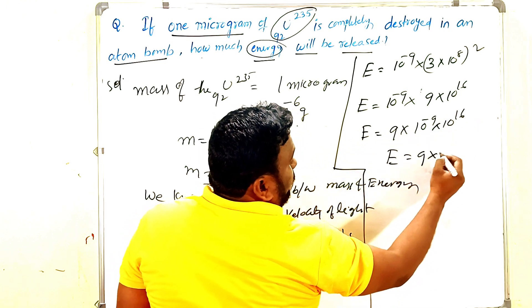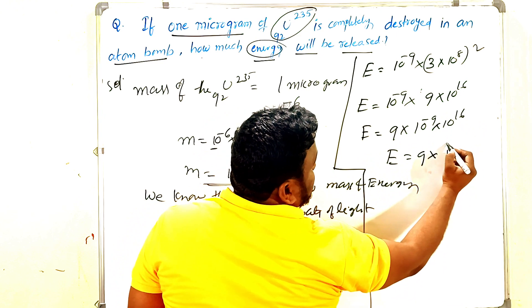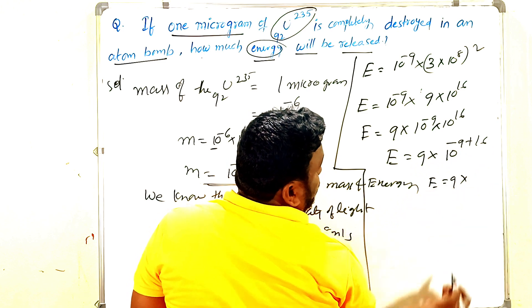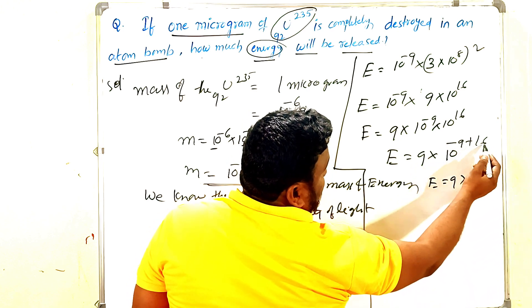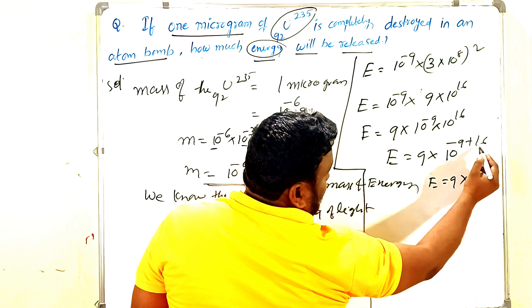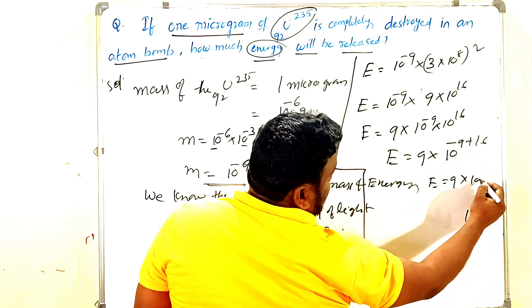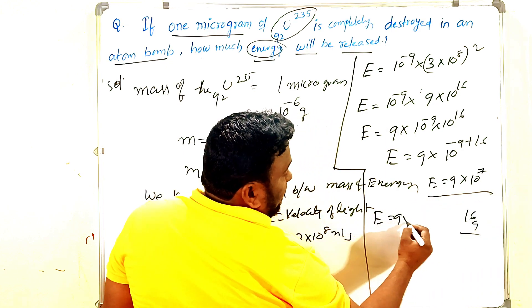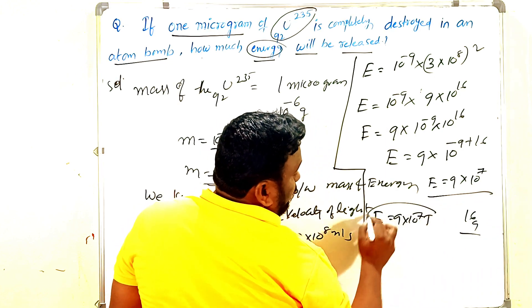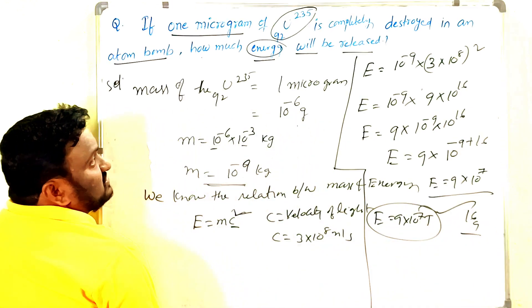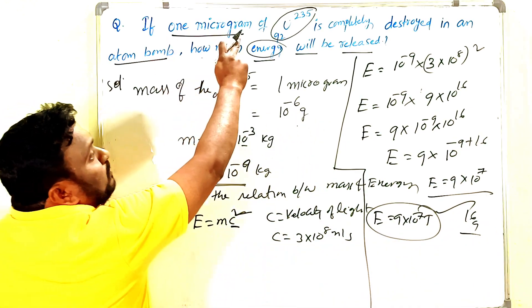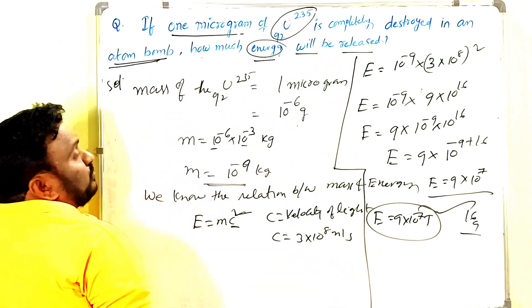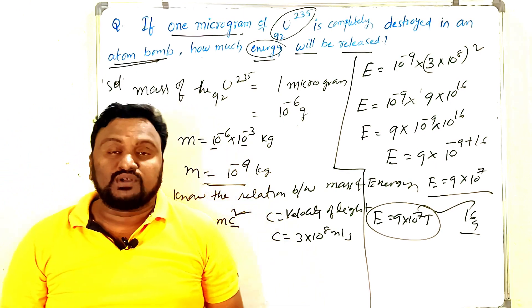Just now only I told you, when bases are equal we have to add the exponents: minus 9 plus 16. Then what you get? E is equal to 9 into 10 power of 7 joules. This amount of energy will be released when one microgram of uranium-235 is completely destroyed in an atom bomb. Thank you for watching.